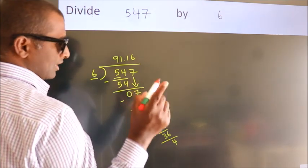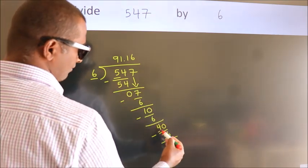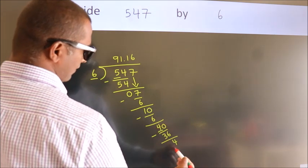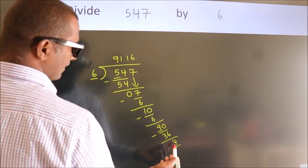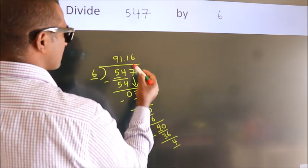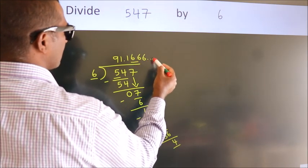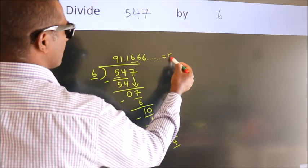Now you observe, we had 4 here and we got 4 again. That means this number keeps on repeating. So this is our quotient.